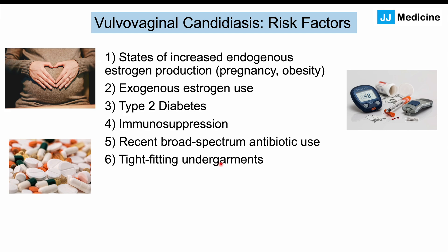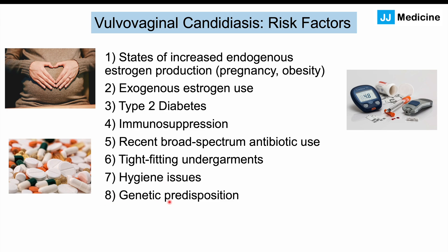Wearing tight-fitting undergarments can produce an environment beneficial for candida growth. Certain hygiene practices such as douching or incorrect wiping after using the washroom also increase likelihood. A genetic predisposition exists as well — genes encoding mannose-binding lectin have been implicated, and patients with higher levels of interleukin-4 (IL-4) are at higher risk, as IL-4 appears to suppress anti-candida responses.